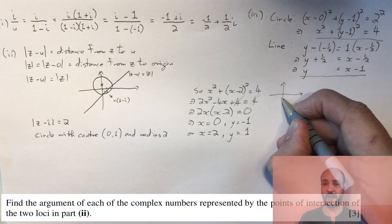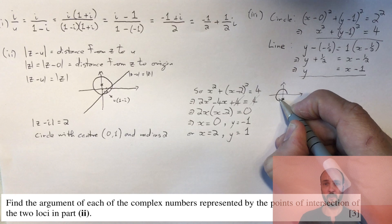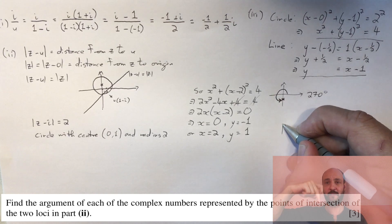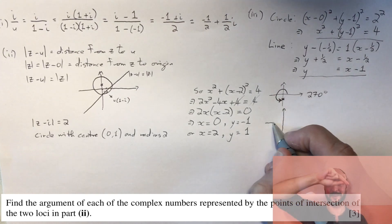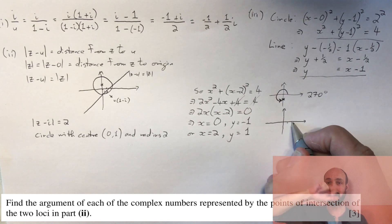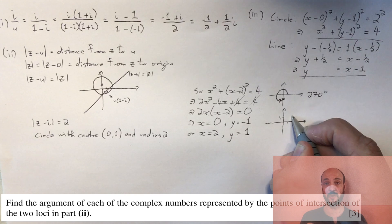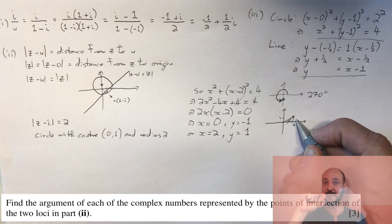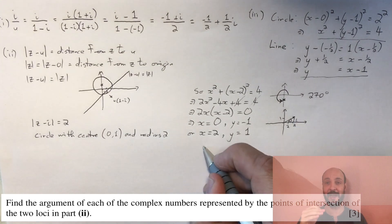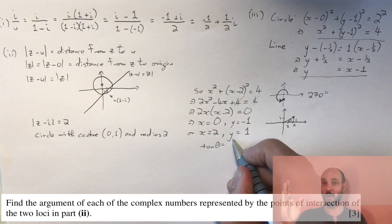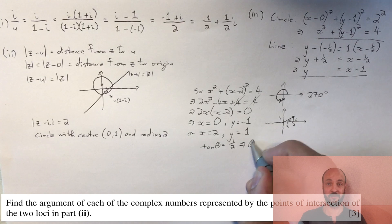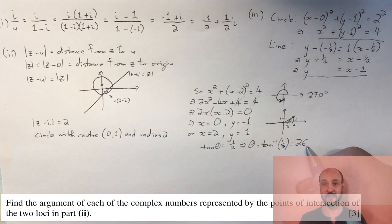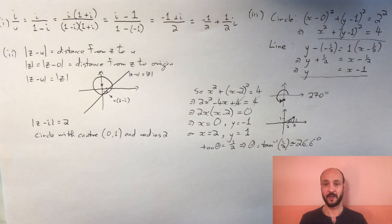Now we need to find the arguments of the complex numbers. For the first one, x = 0 and y = -1, we're going directly down from the origin, so the argument is 270 degrees. For x = 2, y = 1, we're in the first quadrant going 2 across and 1 up. Using trigonometry, tan θ = 1/2, so θ = arctan(1/2) = 26.57 degrees.